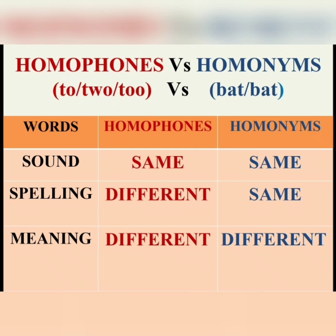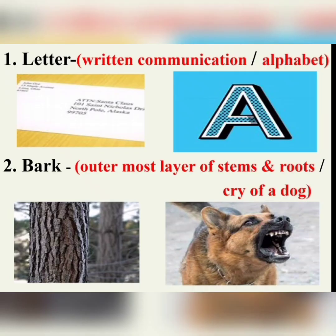For example, the word 'letter.' It refers to written communication — the letter we get or post to others. And the other meaning is alphabet. The word 'bark' refers to the outermost layer of stems or roots, and also the cry of a dog. Even the cry of some animals is also called bark.